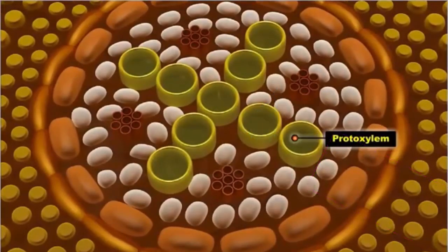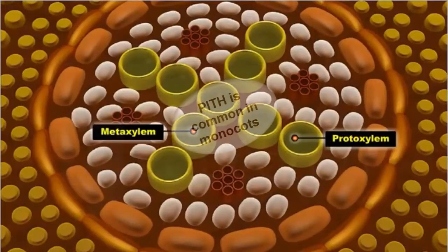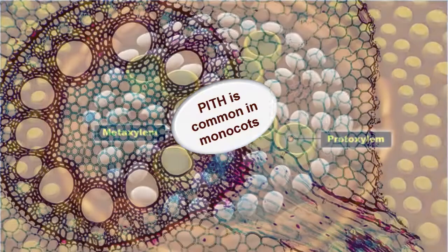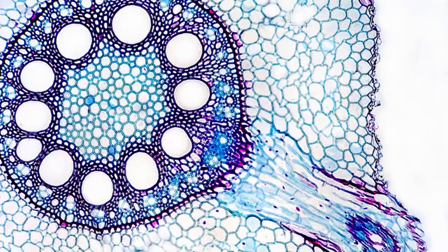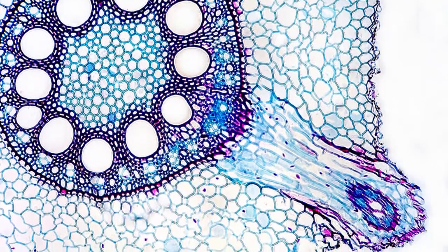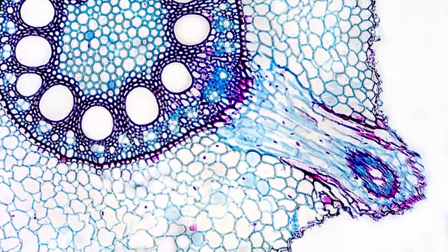I mentioned a while ago that parenchyma cells can still be found filling spaces in the vascular cylinder and they can form the pith, a centralized aggregate of parenchyma cells in some roots. They also contribute to the formation of the vascular cambium together with parenchyma cells in the pericycle as we have learned a while ago.